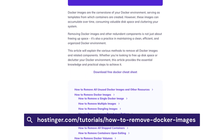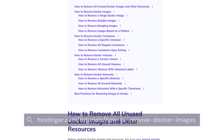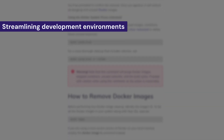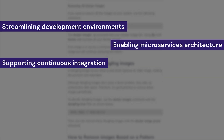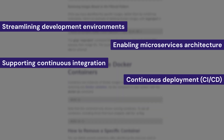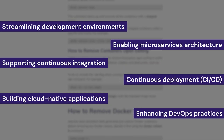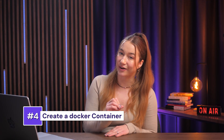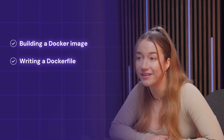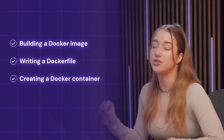There are many different Docker use cases. Some of the most common include streamlining development environments, enabling microservices architecture, supporting continuous integration and continuous deployment, building cloud-native applications, and enhancing DevOps practices. Now that you understand what Docker is and why it's useful, let's dive into actually creating a Docker container. We'll start by building a Docker image, walk through writing a Dockerfile, and then move on to creating a Docker container.